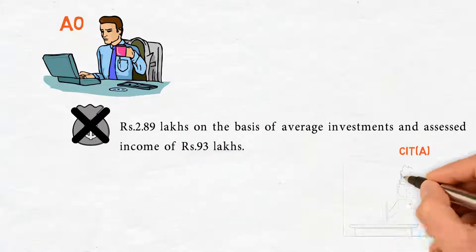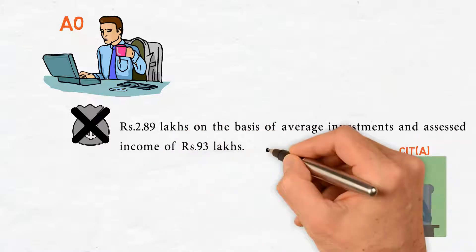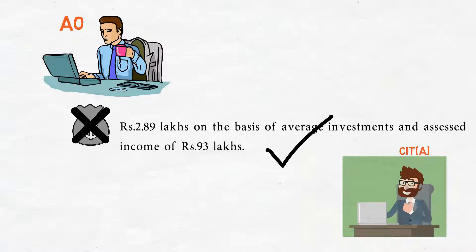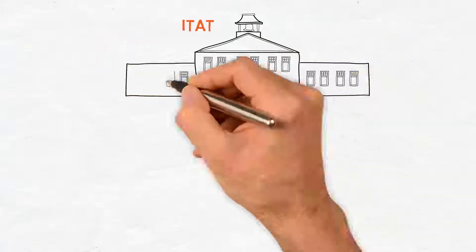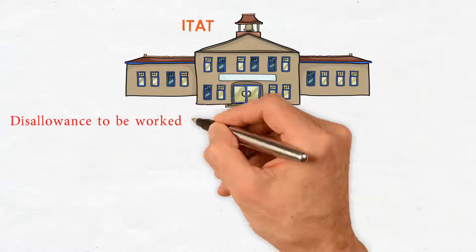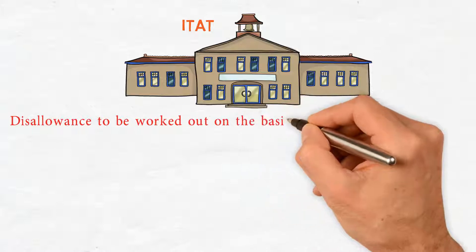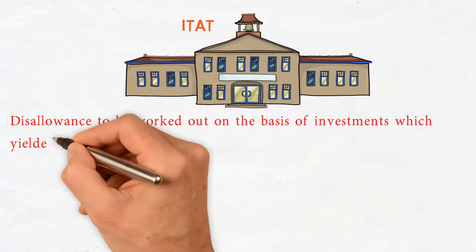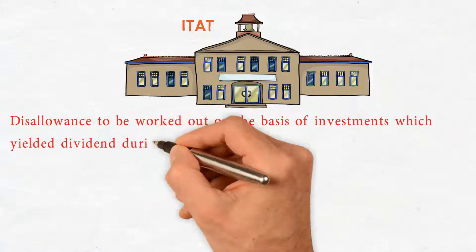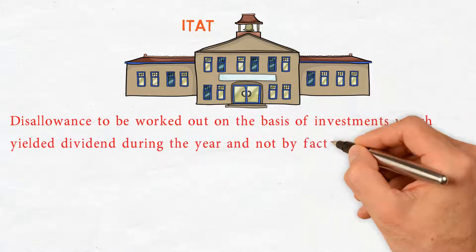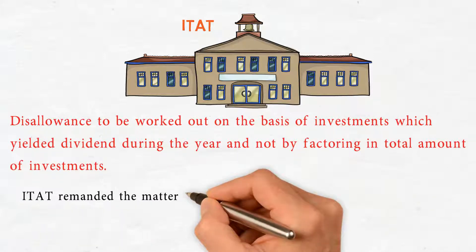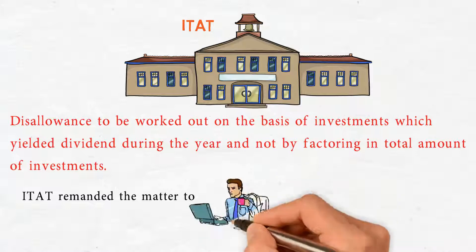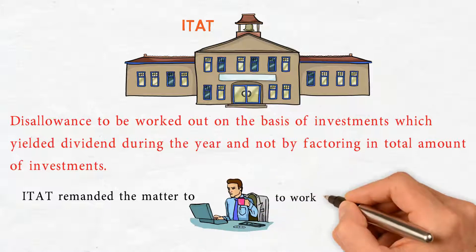CIT Appeals upheld the order of the AO. CIT-80 held that the disallowance had to be worked out on the basis of investments which yielded dividend during the year, and not by factoring in the total amount of investments. CIT-80 remanded the matter to the AO to work out the disallowance accordingly.